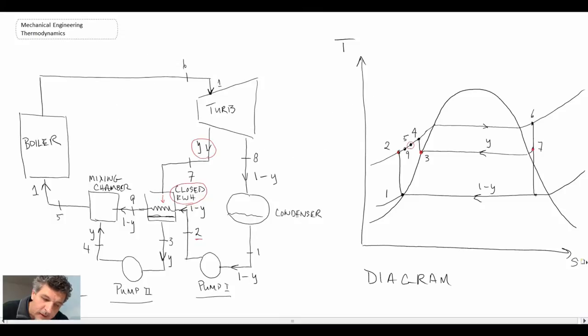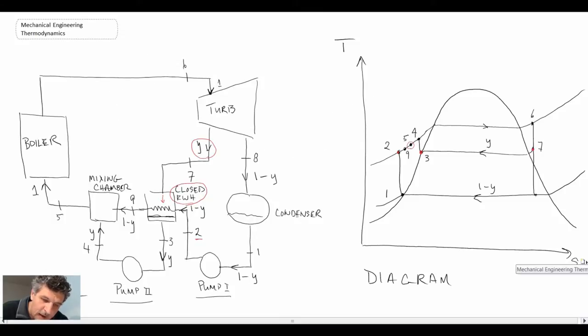This was what we were looking at and we had the enthalpy coming in. So we were at state 2 and we also had fluid coming in at state 7 and then it was exiting at state 3 and state 9.